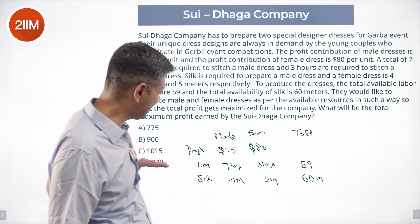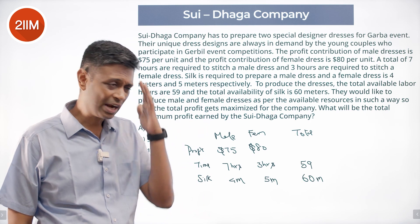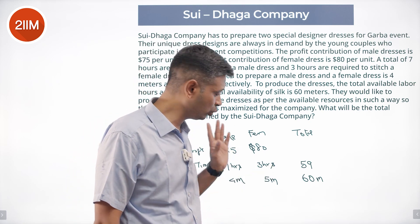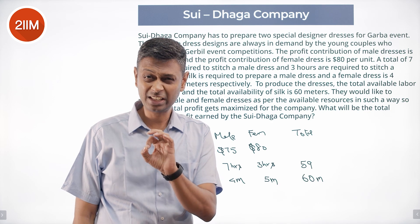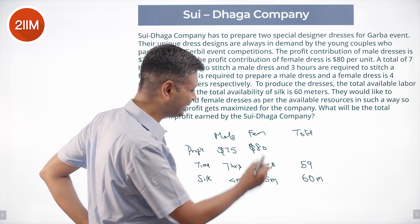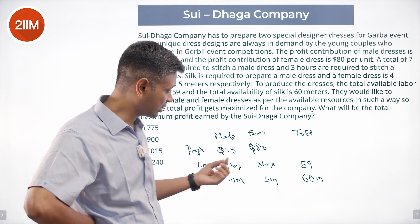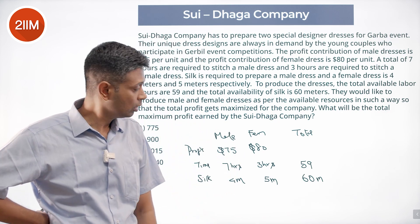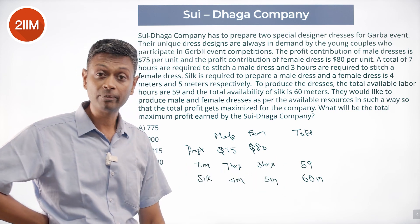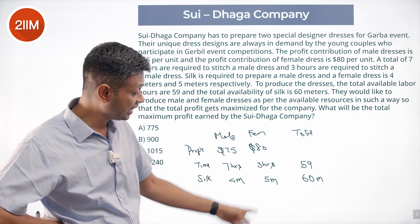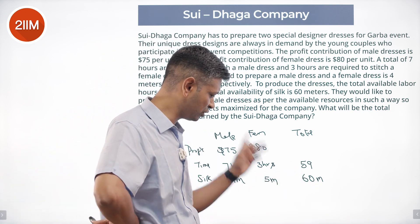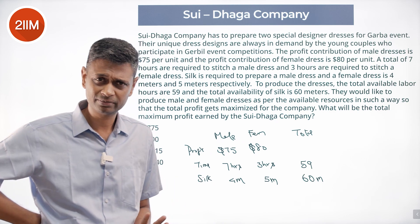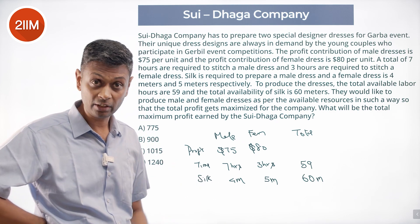Based on the labor required, my gut feel is I should produce everything in female dresses. 59 divided by 3 is more than 19, so I could produce 19 units of female dresses. But I can't produce 19 units because I'd run out of silk material — 60 divided by 5 is only 12. So I cannot produce more than 12 female dresses.